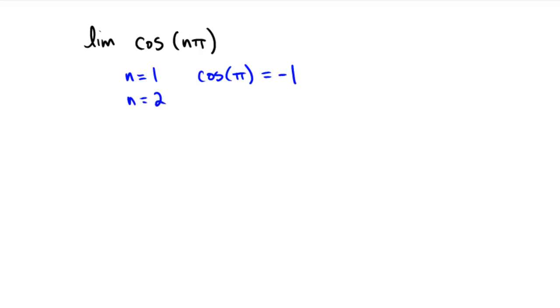If we replaced n for 2, then we would have the cosine of 2 pi, which is 1.